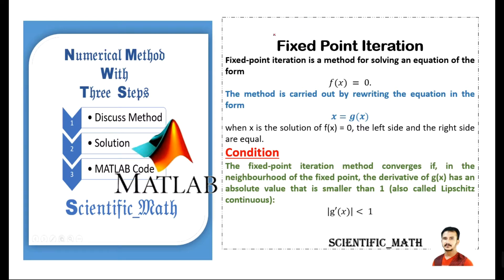The fixed point iteration method, which we discussed in the previous lecture, converges if in the neighborhood of the fixed point the derivative of g(x) has an absolute value less than 1. This is the condition for convergence; if |g'(x)| is not less than 1, the method will diverge.